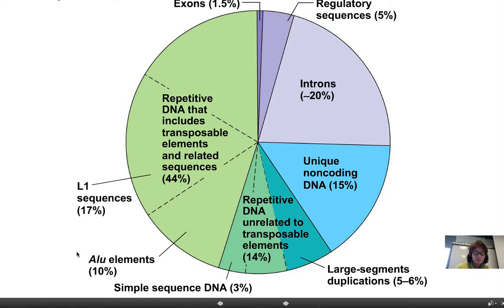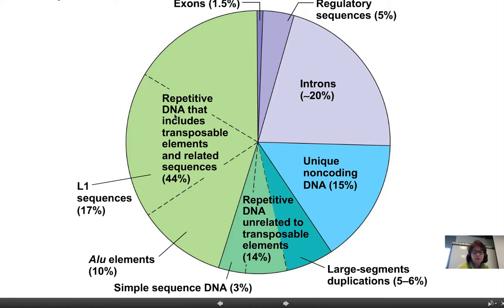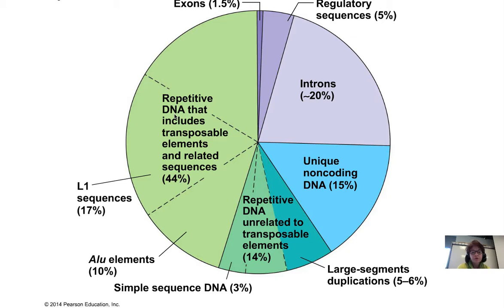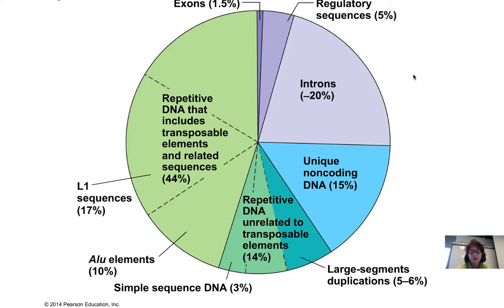ALU elements are interesting — they exist in 10% of the genome. They seem to be a specialized kind of leftover transposon that doesn't move around much anymore. All people have them, and we have different versions. Transposons are movable elements; they could surround genes no longer expressed — called pseudogenes — that may have lost a working promoter or have a missing chunk. Some sequences actually are important for expression. Viruses are hiding out in our genome. Our genome is basically a culmination of a long time of evolution.